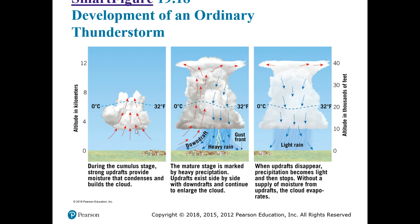Then we have the mature stage of the thunderstorm. The front of the storm is moving in this direction. If you put a person at the leading edge, you might notice that wind is associated with a storm — cool or cold air that can sometimes be quite violent even before the rain starts.